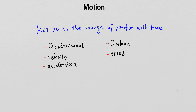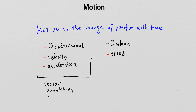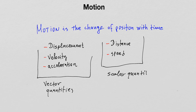Those quantities are separated into two groups intentionally because they represent two different types of quantities in regards to how they are defined and what their properties are. The first group — displacement, velocity, and acceleration — is known as vector quantities. The second group is known as scalar quantities. For short, vector quantities are simply referred to as vectors, and scalar quantities as scalars.